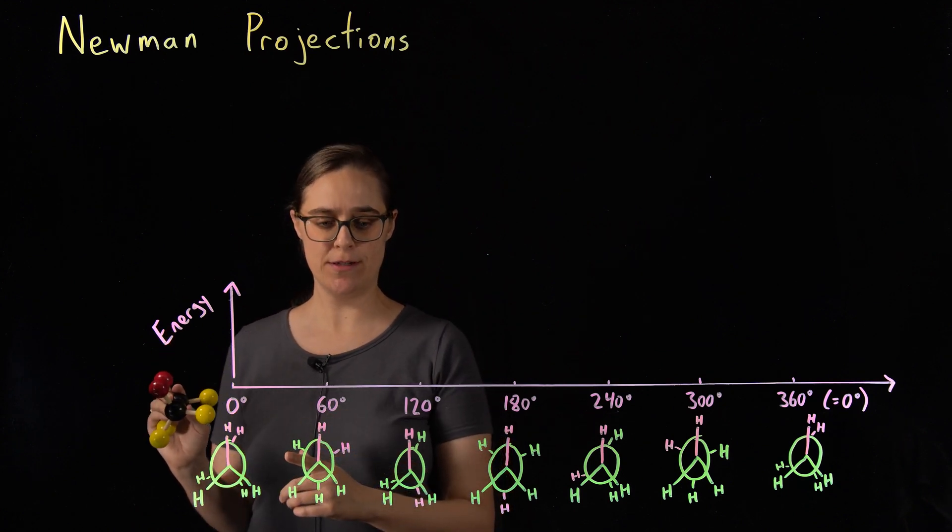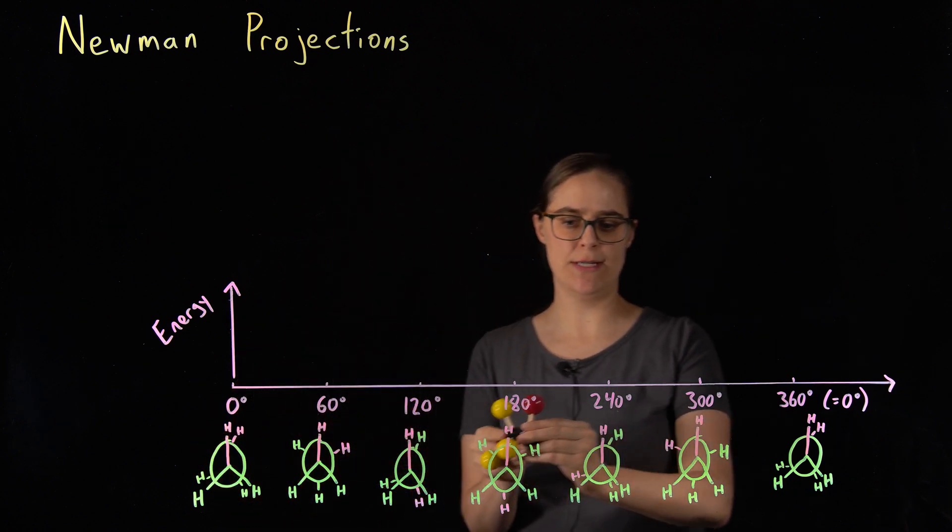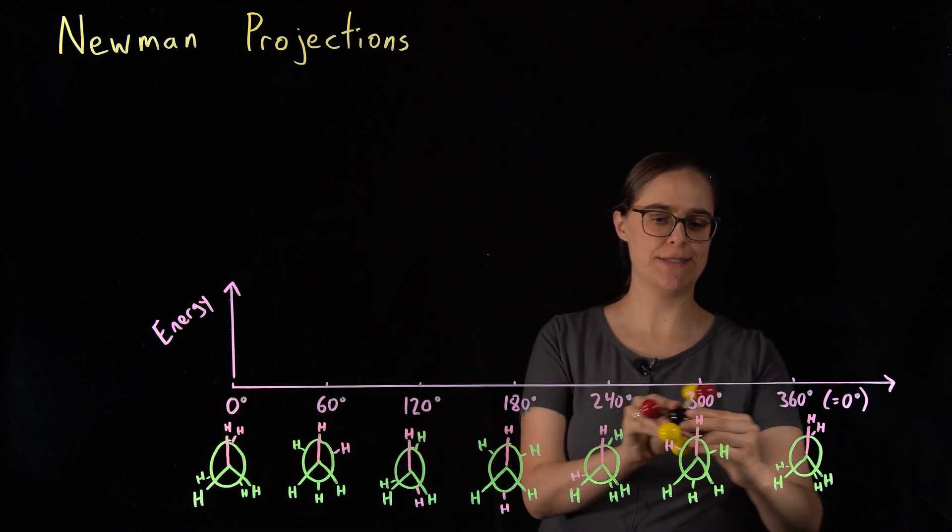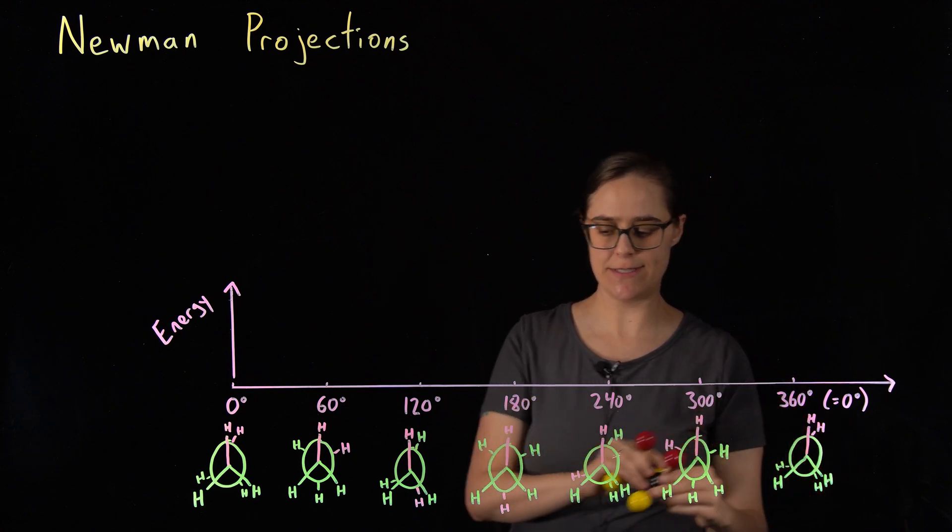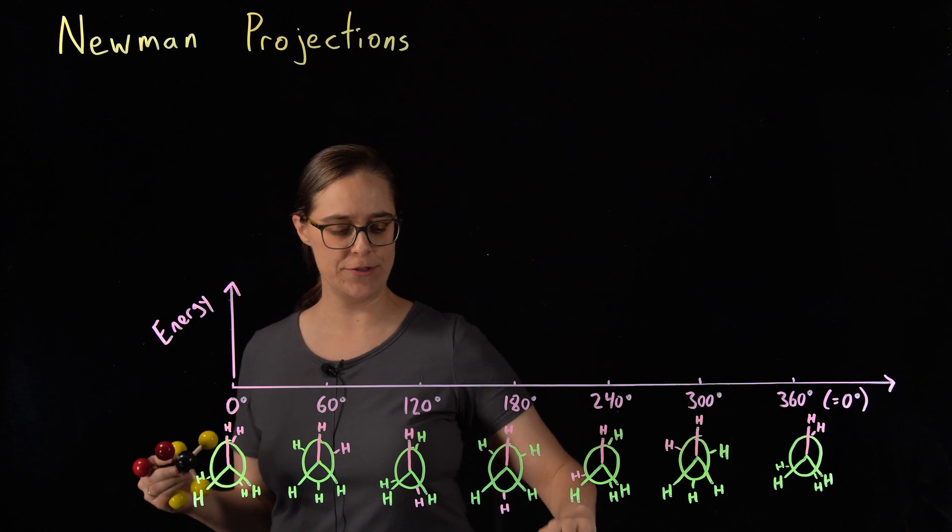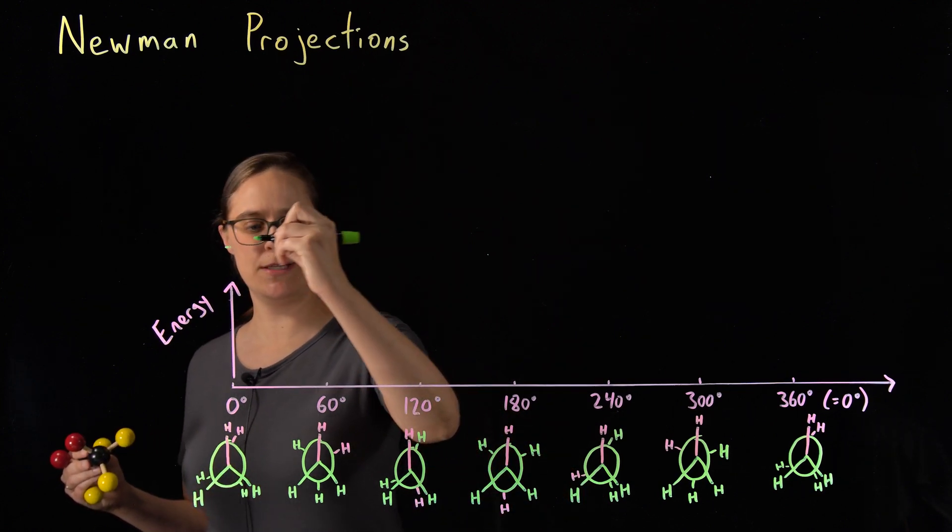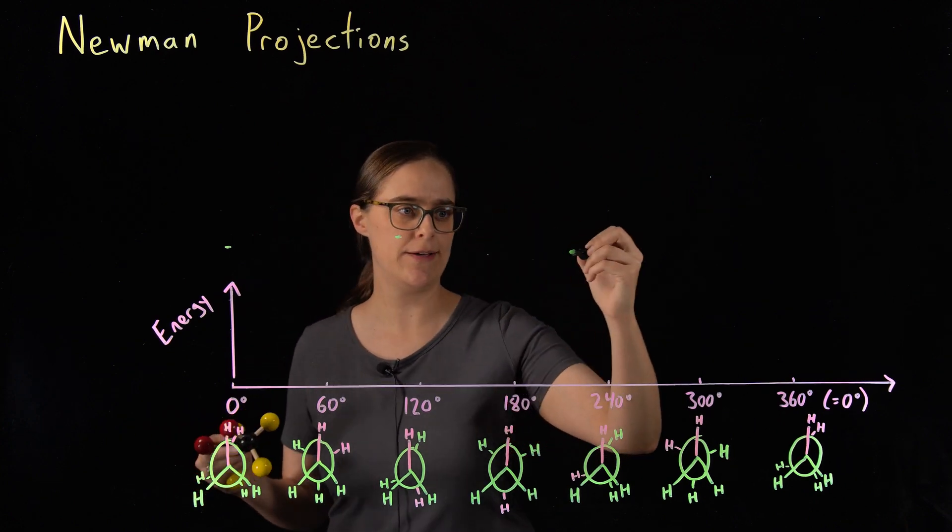All of the eclipsed conformations, meaning zero degrees, 120 degrees, 240 degrees, and then back to the beginning, 360 degrees, these are all less stable and higher energy. So you are going to see them all having the same potential energy, and it is going to be something higher.